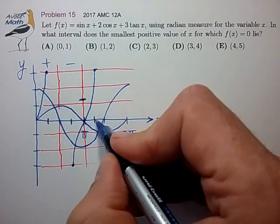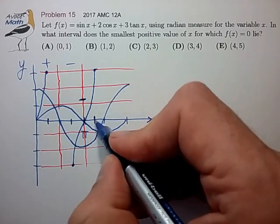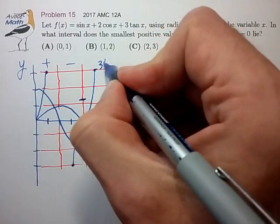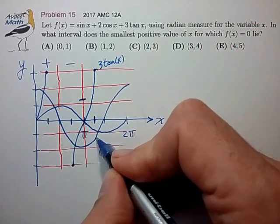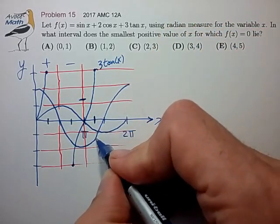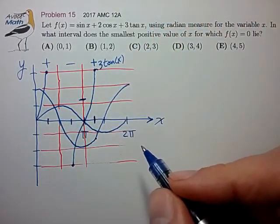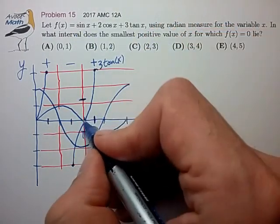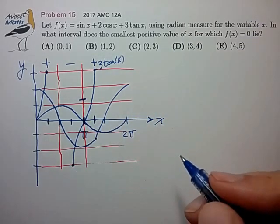And it looks like when we move over another 45 degrees, we have the 3 tan x equaling 3, which more than compensates for these two negative numbers. So this is a positive number here. So this function must cross the zero point somewhere between pi and pi plus another 45 degrees.